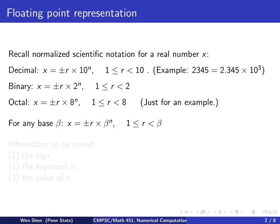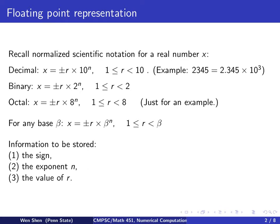In a general situation, you have a number base beta, and the number x can be written as plus or minus r times beta to the power n, where r lies between 1 and beta, strictly less than beta. Looking at all these examples, to store information for this number you need to store three things: the sign (positive or negative), the exponent n which tells you the magnitude, and the value r.